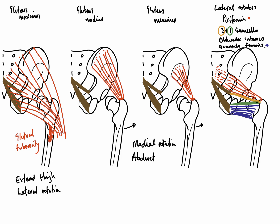The final muscle is obturator internus, which originates from the inside of the pelvis — specifically the inner surface of the obturator foramen — and exits via the lesser sciatic foramen. Together, these lateral rotator muscles are important as they laterally rotate the thigh, and quadratus femoris also helps to steady the femoral head in the acetabulum.